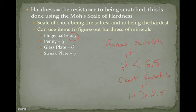A penny is about 3, and a glass plate is 6. So if your mineral scratches the glass, it's greater than 6; if it cannot scratch the glass, it's less than 6. The streak plate is a 7, which means we can't do the powder or streak test for minerals with a hardness greater than 7. So as you're doing that in class, pay close attention: is that the powder of the mineral, or is that the powder of the ceramic tile?